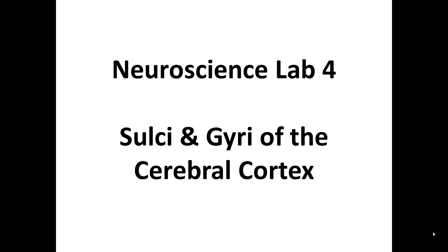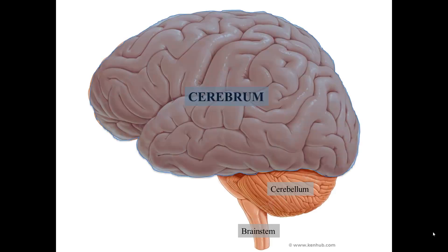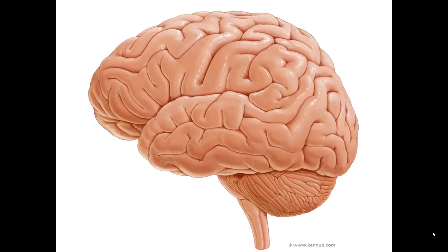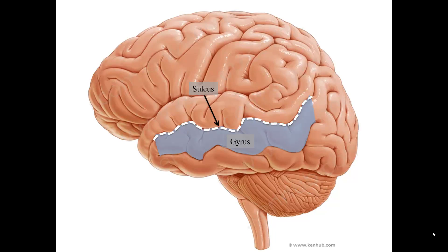Welcome to the pre-lab video for Lab 4 of the Neuroscience course. This lab will focus on the gyri and sulci of the cerebral cortex. You should remember that the cerebrum is the largest of the regions of the brain, and that its cortex is made up of many gyri, which are the ridges, and sulci, which are the grooves.